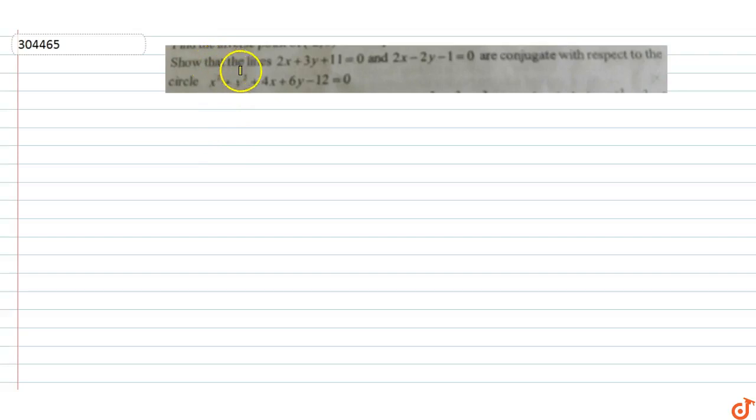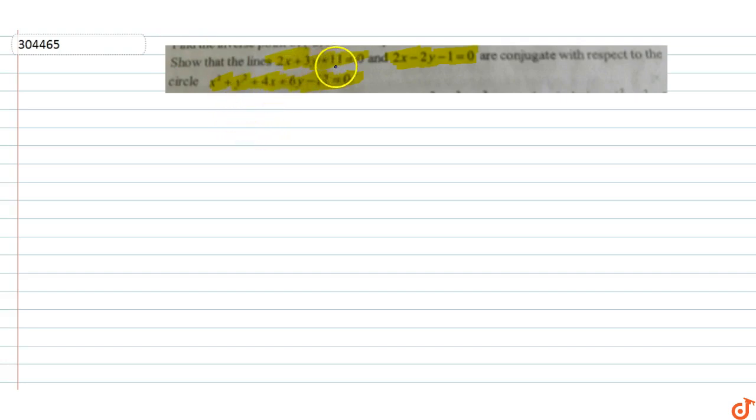In this question we have to show that the lines 2x + 3y + 11 = 0 and 2x − 2y − 1 = 0 are conjugate with respect to the circle x² + y² + 4x + 6y − 12 = 0.